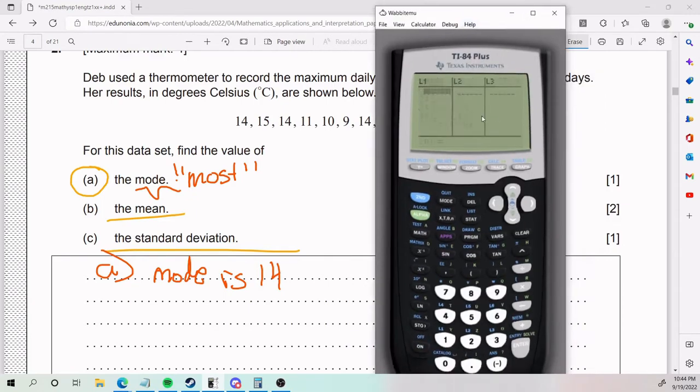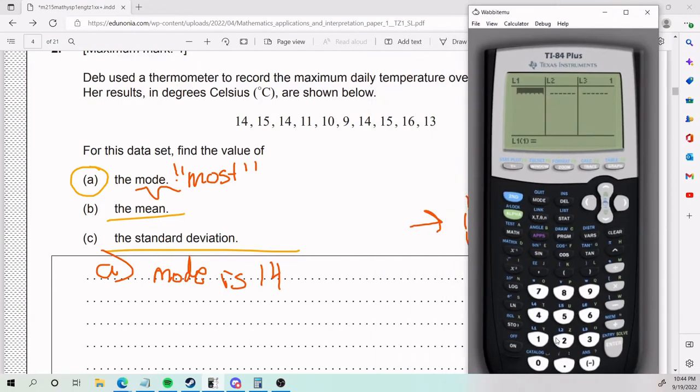Why stat? Because this is like a statistics problem. Mean and standard deviation sounds like statistics, that's why you go to stat. And edit, why do we edit? It brings up a list and we can put our values here. So give me a moment, I'm gonna put my values: 14, 15, 14, 11, yada yada yada. Wonderful. What do I do now? Now wait, give me one second, let me double check, it's always worth double checking.